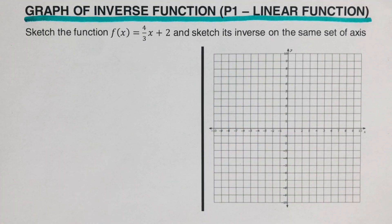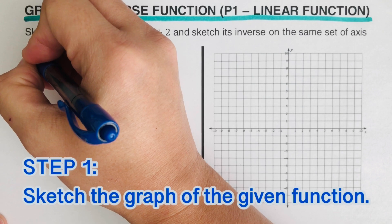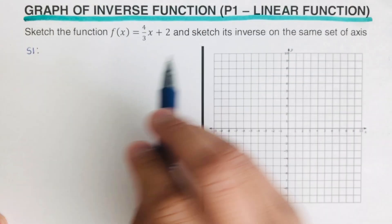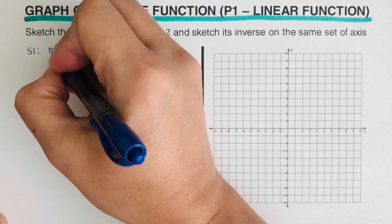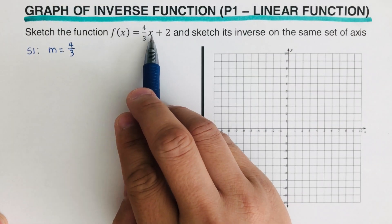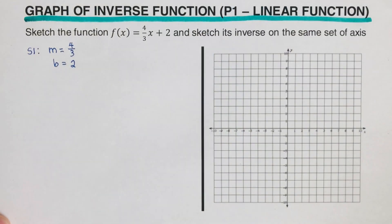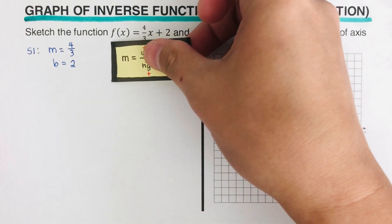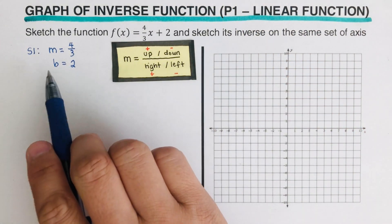There are steps we need to follow in order to sketch the inverse. The first step is to sketch the graph of the given function. From this function, we can see that our slope m is 4/3. This is in y = mx + b form, and our b is 2. The slope is represented by a fraction that tells us where to go from the y-intercept.